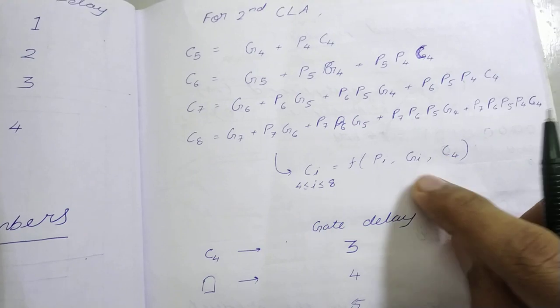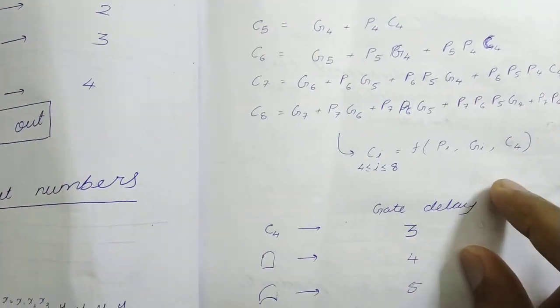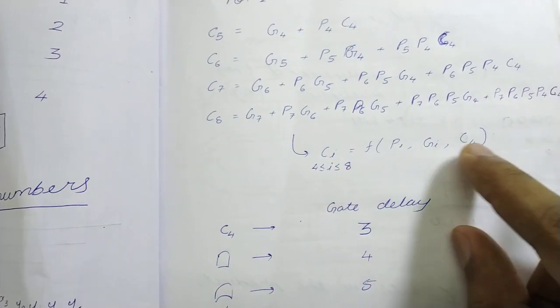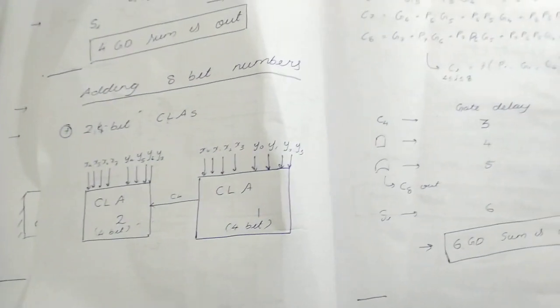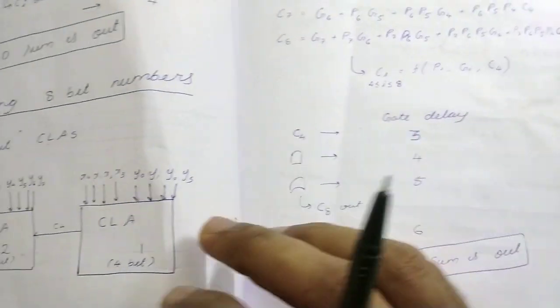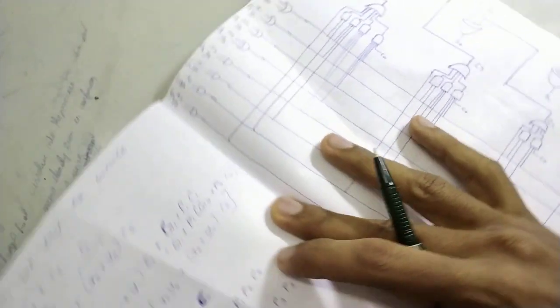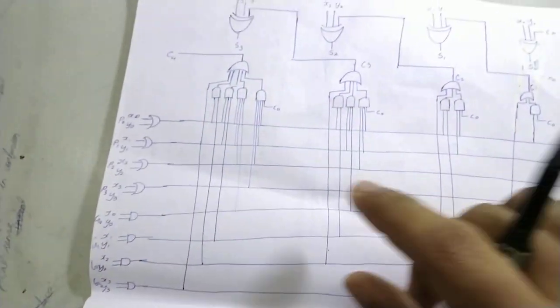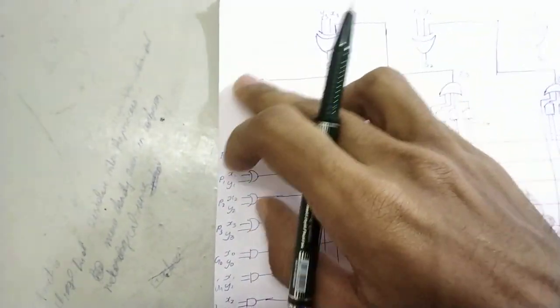You will get these equations. So what we have done here is we have calculated every one of the carry using as a function of PIs, GIs and C4. Now let's see how many gate delays it takes to add this 8-bit number. So what happens is the first 4 bits comes here. This CLA works and just like it happens here, the same thing happens. And C4, as we know before, like here, when does C4 come out at 3rd gate delay? In the 3rd gate delay, C4 comes out.